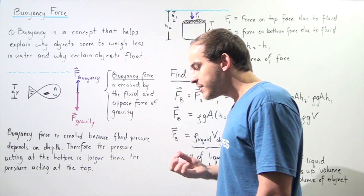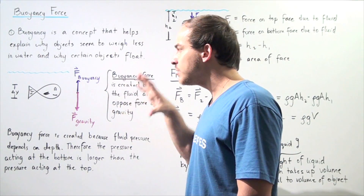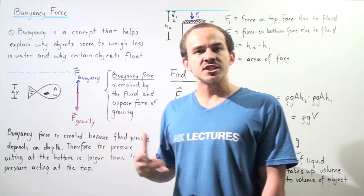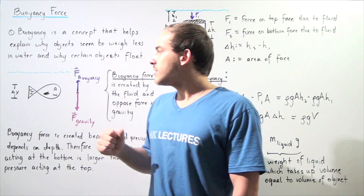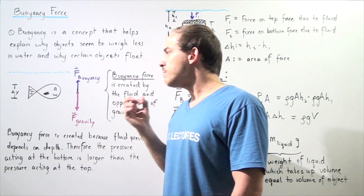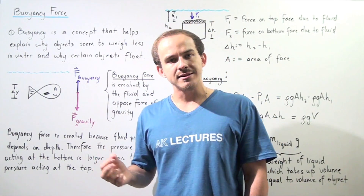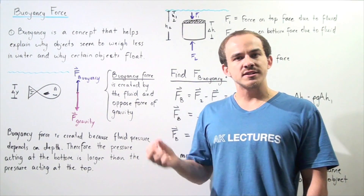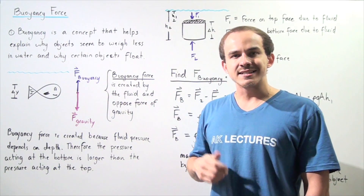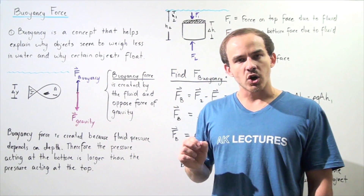One thing that fish are able to do is they're able to remain in place — to hover — inside the water. When a fish hovers, it essentially remains in static equilibrium. That means the sum of all the forces acting on the fish along any axis, let's say along the y-axis, must sum up to zero.